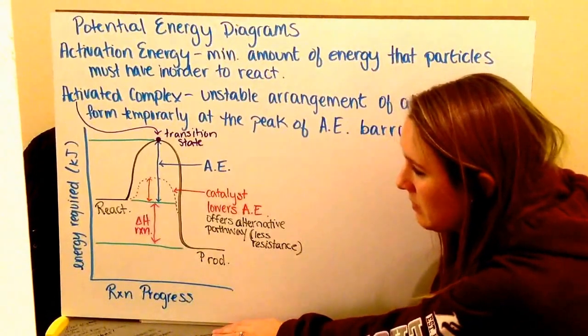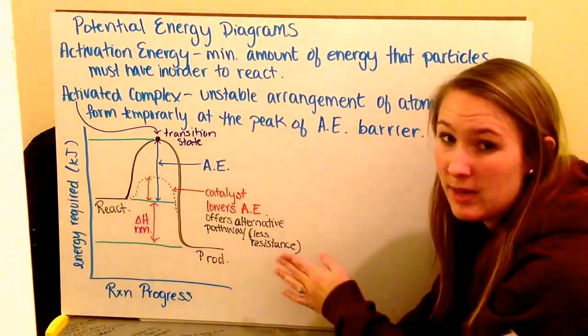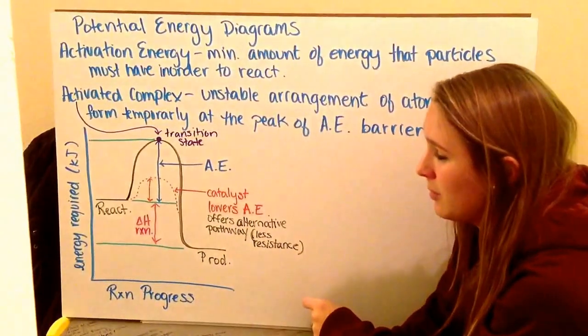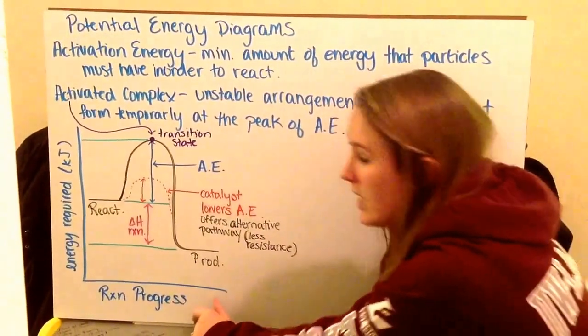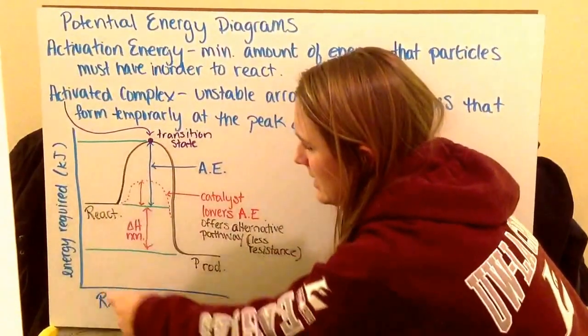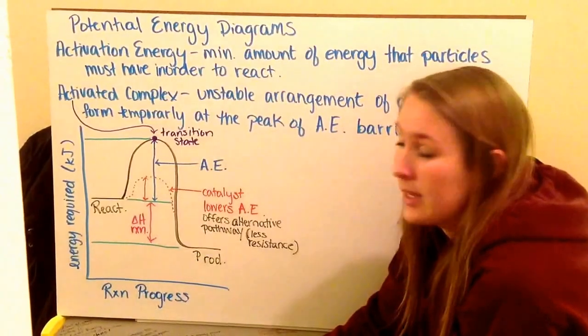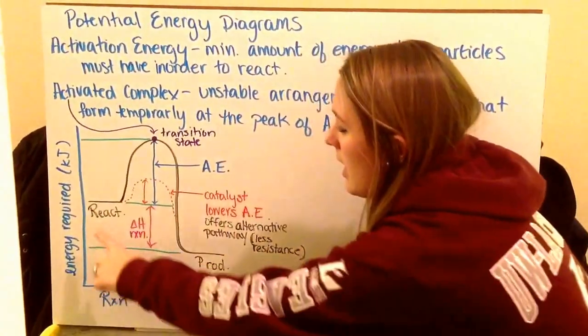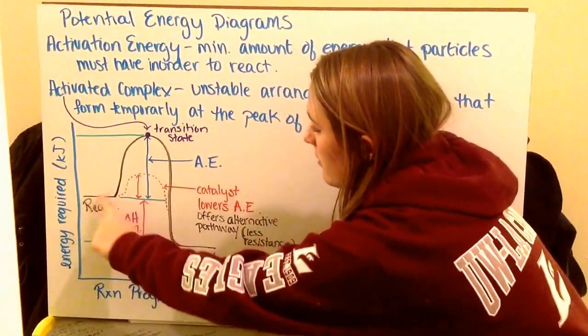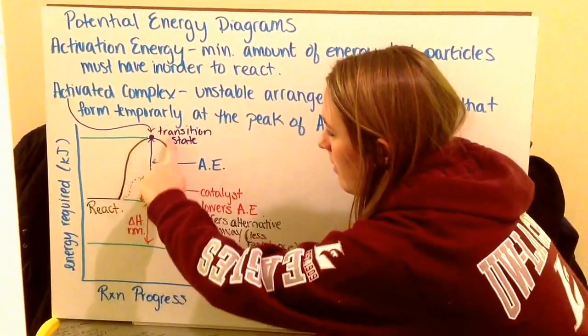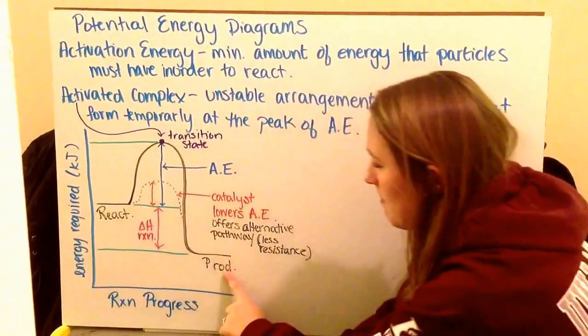So this is a diagram of a typical potential energy diagram. There's two different types. This is one. You'll get to the next one in a little bit. On our X axis, we have the progress of the reaction. On our Y axis, we have the energy required and standard is in kilojoules, which is that KJ. We have our energy diagram, where we start with our reactants. Then we have this little hump that comes down to your products. So starting with reactants, then the products.